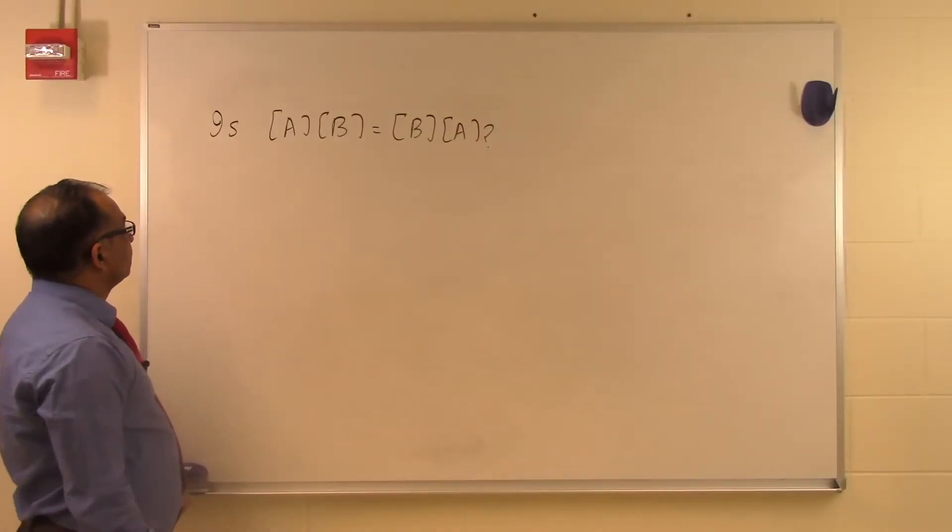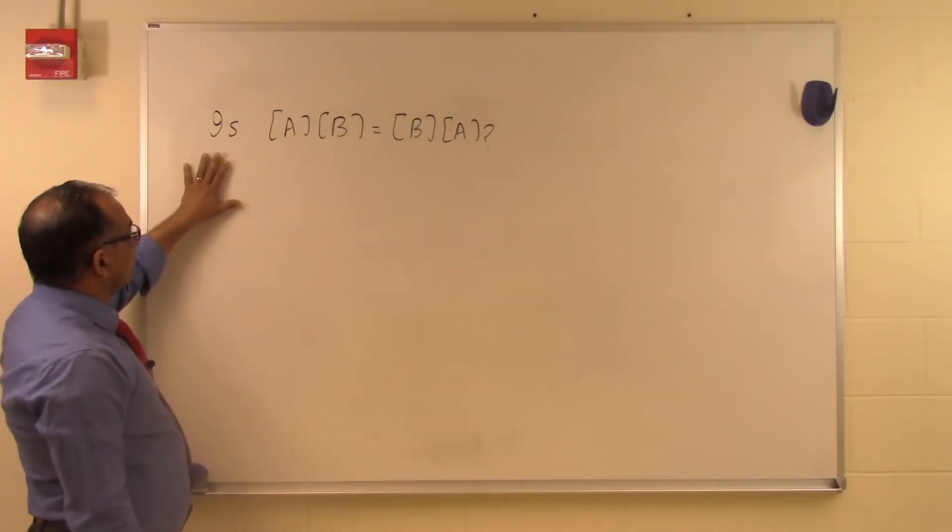In this segment we're going to talk about is A times B same as B times A, which is basically trying to see whether the commutative law of multiplication of matrices is valid.